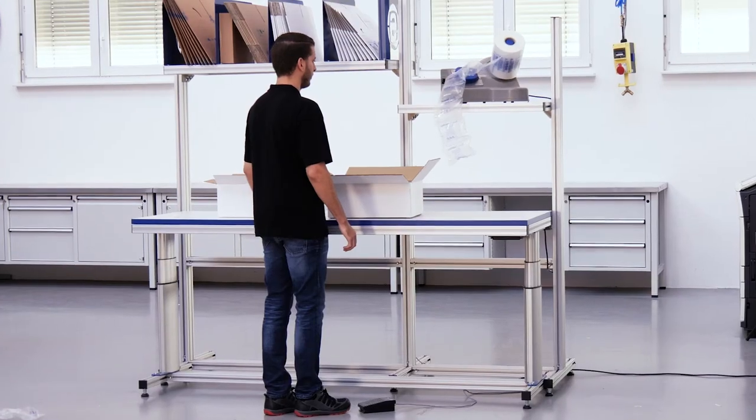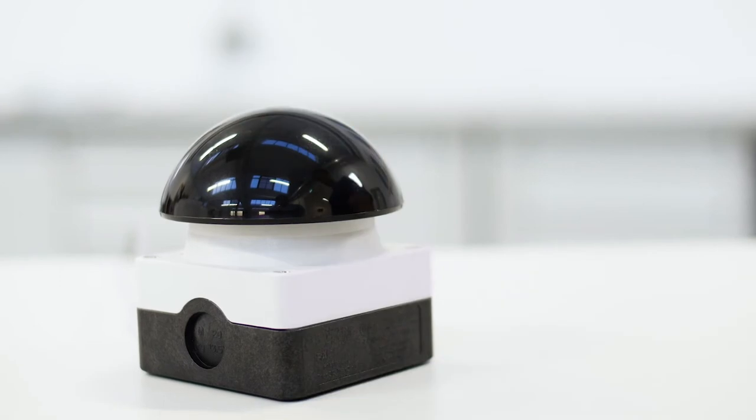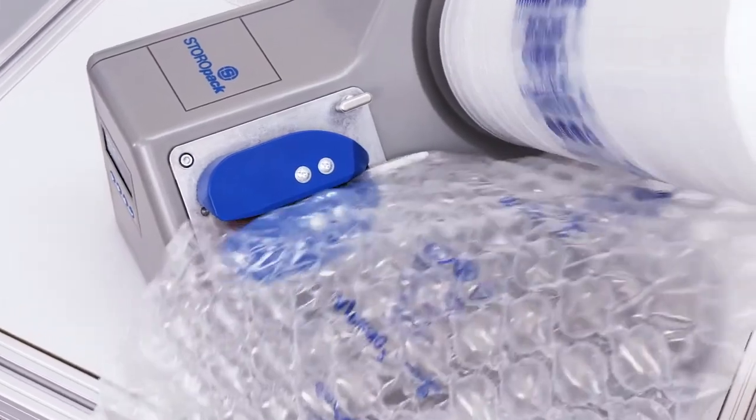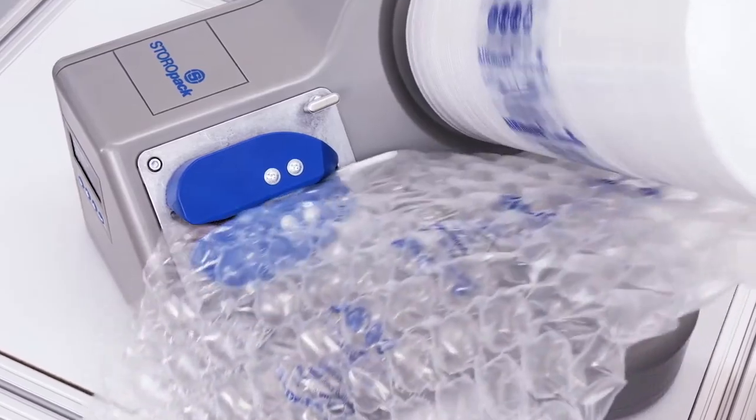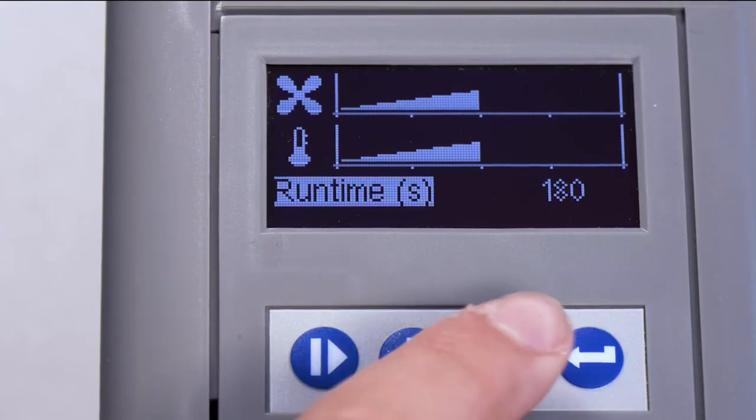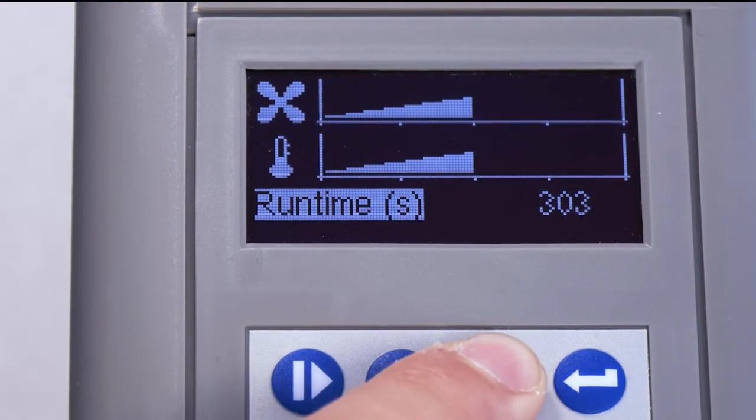AirMove 2 can also be operated by foot pedal or hand button. It's convenient and practical. Its high speed means that all packing processes can be completed quickly and efficiently. The run time function lets you set the length of time you want the machine to make cushions.